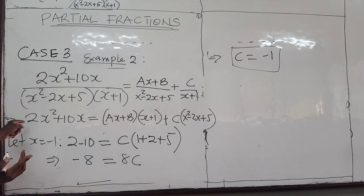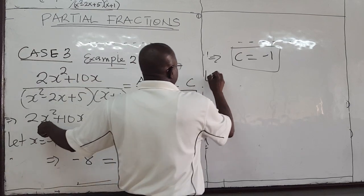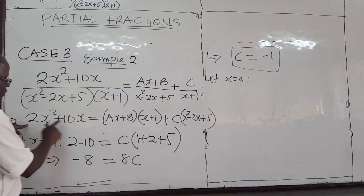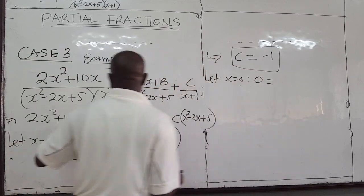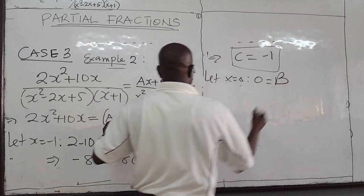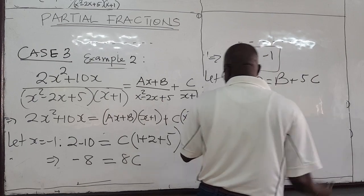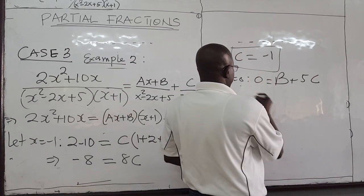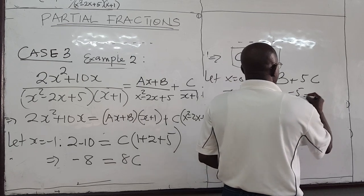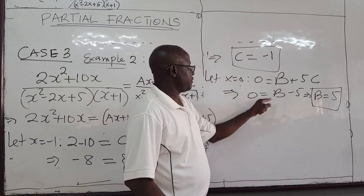So we have c. Now I can choose other values for x. Let x be equal to 0. With x equal to 0: the left side goes to 0. The ax term is 0, so I'm left with b times 1, which is b. And for the c term: 0 squared minus 0 plus 5 gives 5c. So 0 equals b plus 5c. Since c is negative 1, 5c is negative 5, so b equals 5.